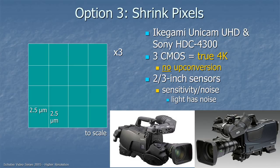Option number three is to shrink the pixels and still have a two-thirds-inch chip, but with 4K resolution instead of HD or 2K. That's what Ikegami and Sony have done in some of their new cameras. There are three CMOS chips, and they are true 4K — so there's no up-conversion. But being two-thirds-inch sensors means that by going to 4K, they have reduced the size of the photo sites from 5 microns on a side to 2.5 microns on a side, which raises some issues about sensitivity and noise.